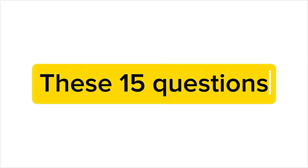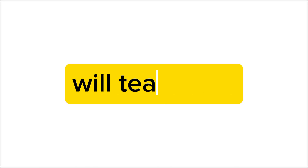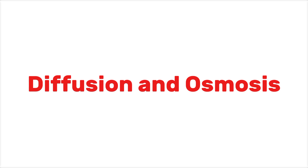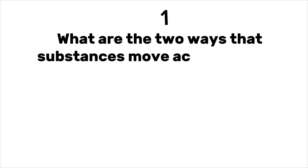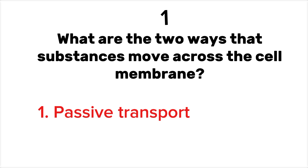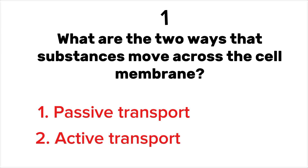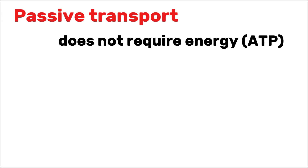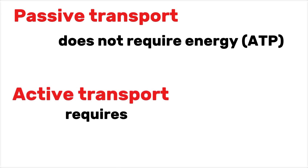These 15 questions and answers will teach you about diffusion and osmosis. Number 1. What are the two ways that substances move across the cell membrane? Passive transport and active transport. Passive transport does not require energy. Active transport requires energy.